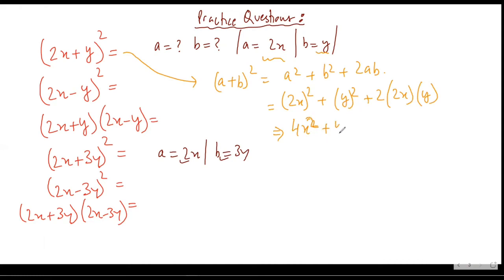4x². This would be y² for y². 2 into 2 would be 4, x into y would be xy. So the expansion is 4x² + y² + 4xy. Satya, have you understood now? Yes, sir.